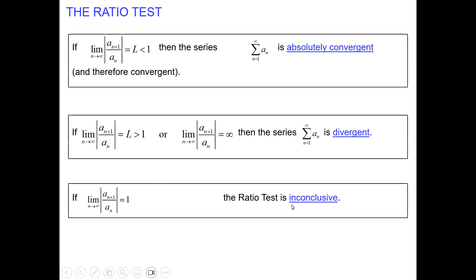This test is quite helpful especially when the infinite series formula contains a couple of different math expressions — for instance, a power function, exponential function, possibly factorial, or any other combination of algebraic expressions. The ratio test is not helpful if we have just a rational function, a ratio of two polynomials, because creating the next term doesn't change the degree. Then a_{n+1} and a_n will have the same degree and the same leading coefficient, so the limit will always be 1 — inconclusive.